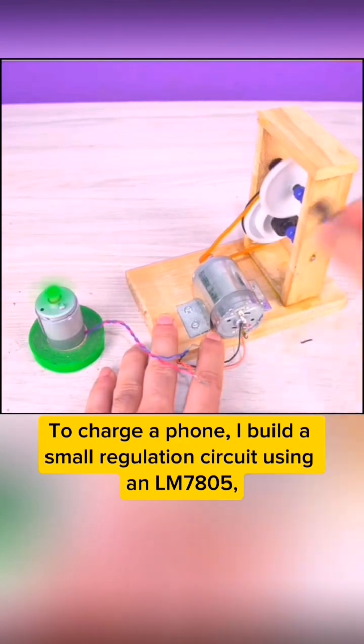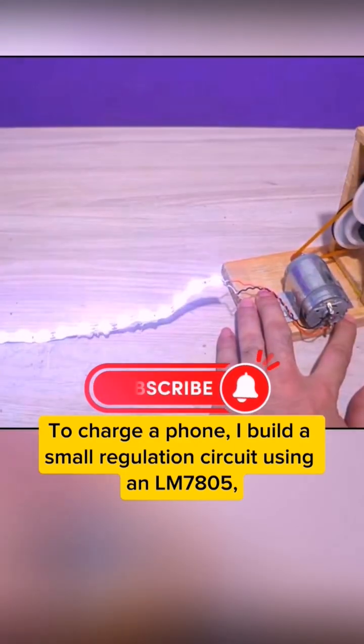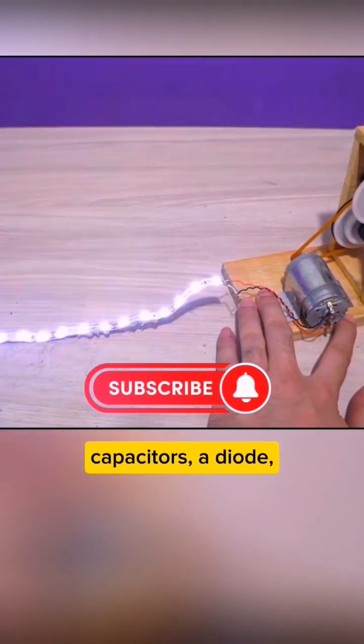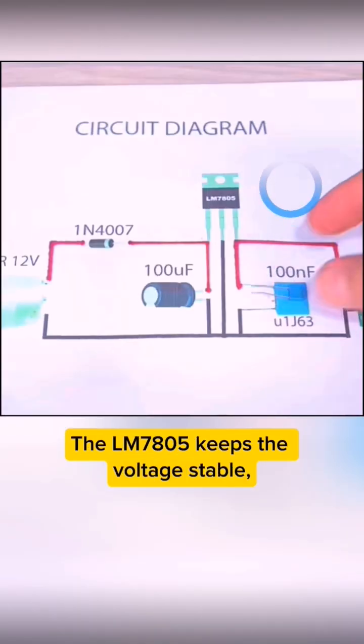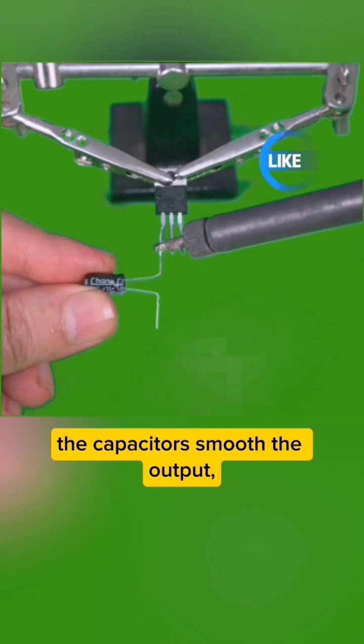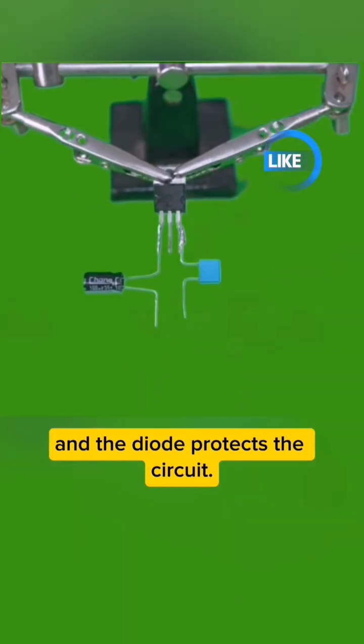To charge a phone, I build a small regulation circuit using an LM7805, capacitors, a diode, a variable resistor, and a USB port. The LM7805 keeps the voltage stable, the capacitors smooth the output, and the diode protects the circuit.